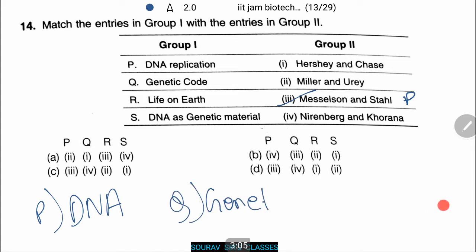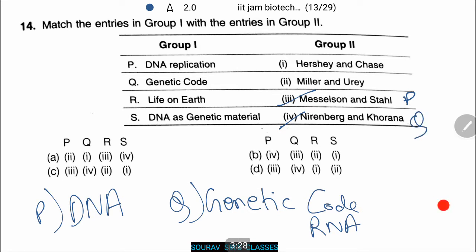Now let's check Q — genetic code. Har Gobind Khorana developed a chemical method for the synthesis of RNA molecules with defined base combinations. Marshall Nirenberg, number 4, and Khorana are the right answer. Thus Q will be 4. Nirenberg's contribution came through a cell-free system of protein synthesis that helped in deciphering the genetic code.